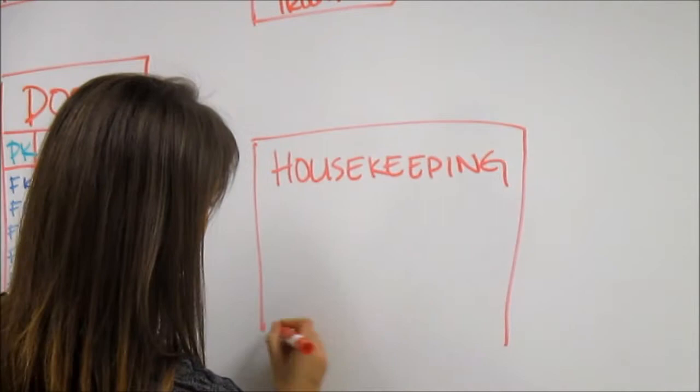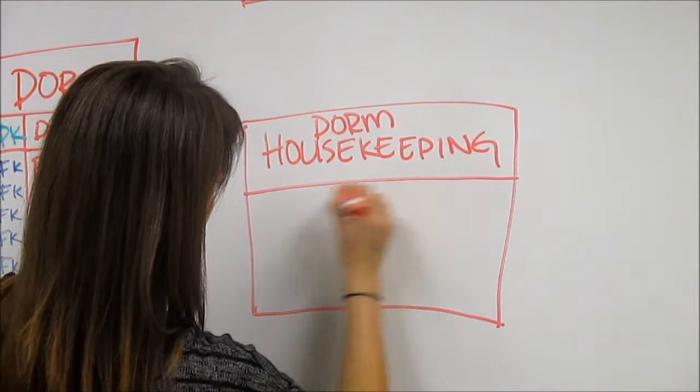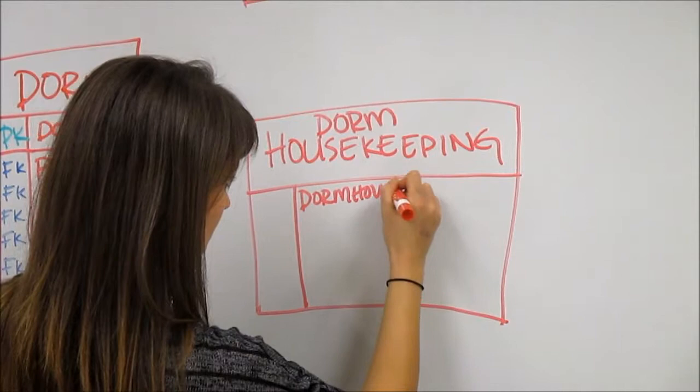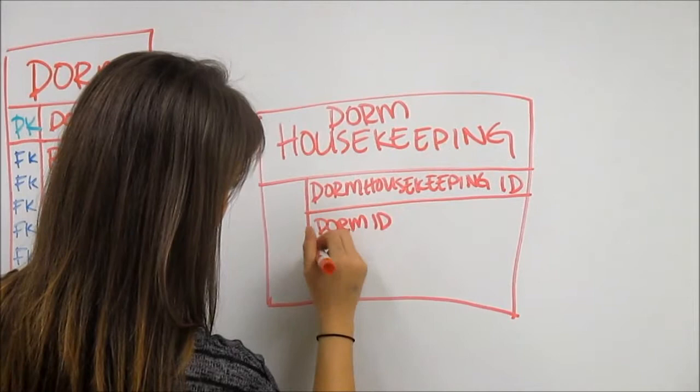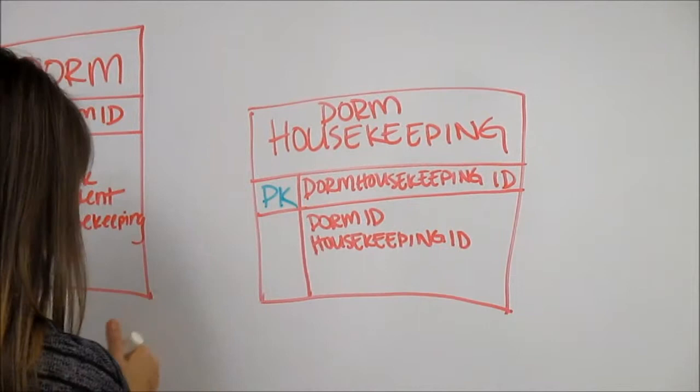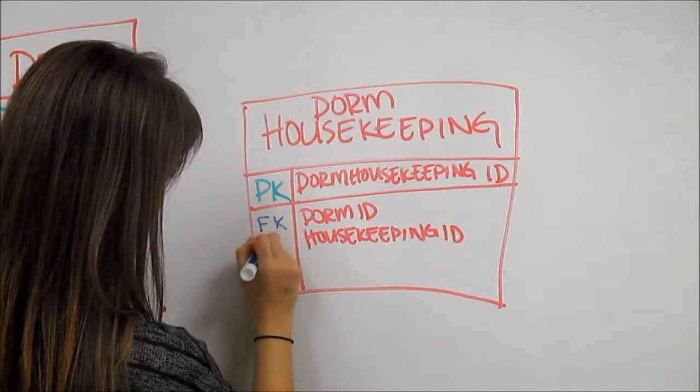We next move to our entity known as dorm housekeeping. This is an associative table, which we will explain more later when we assign the relationships between entities. Identify the primary key of dorm housekeeping ID and list the attributes below, including dorm ID and housekeeping ID. Remember to identify primary keys and foreign keys to the left of the attributes.